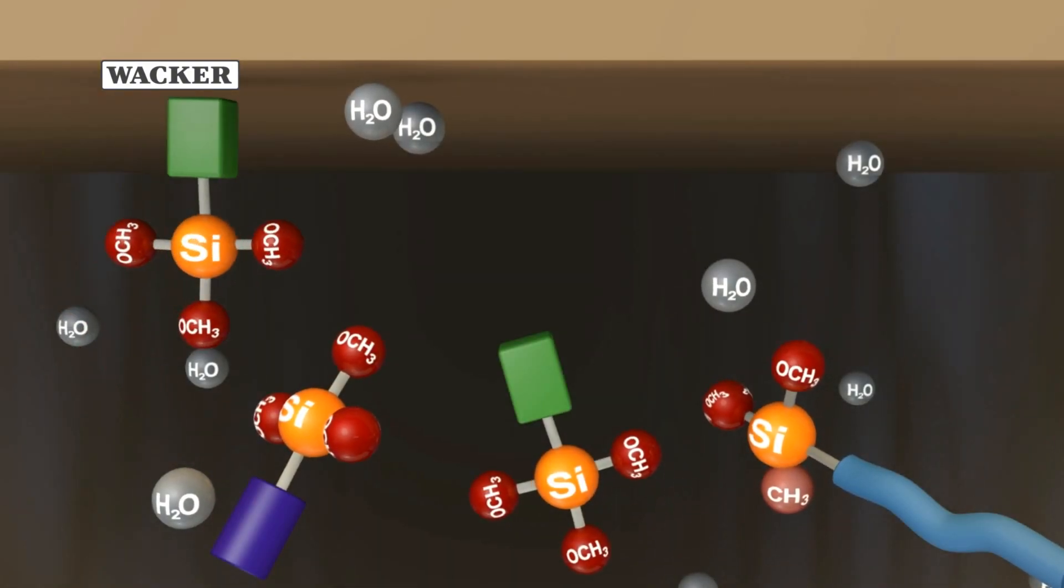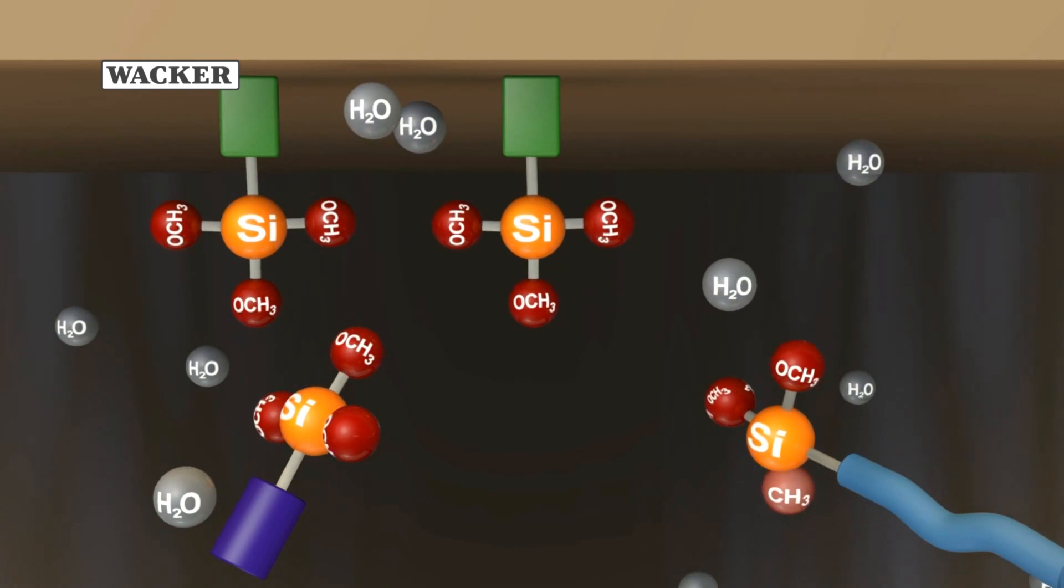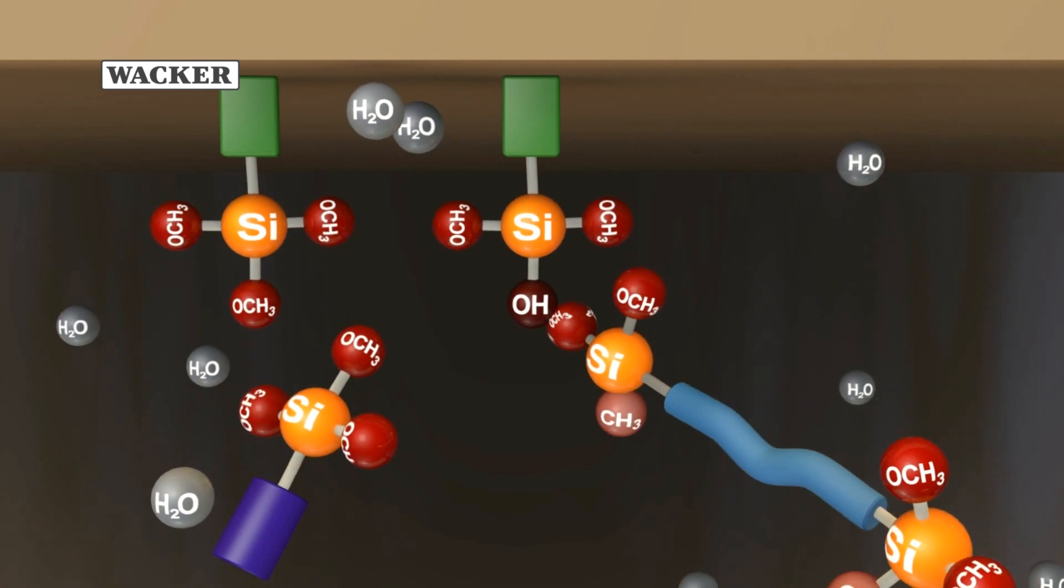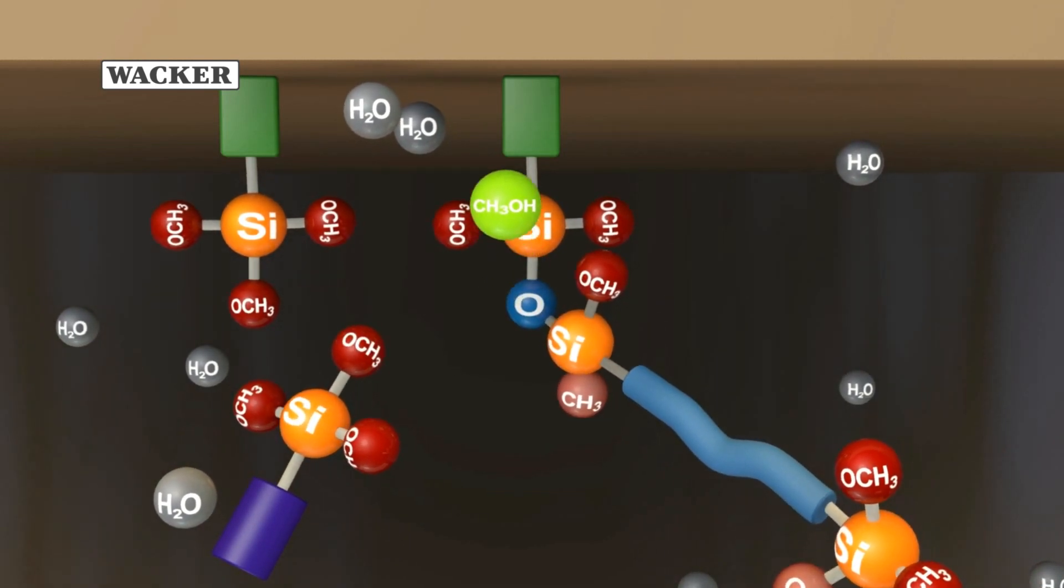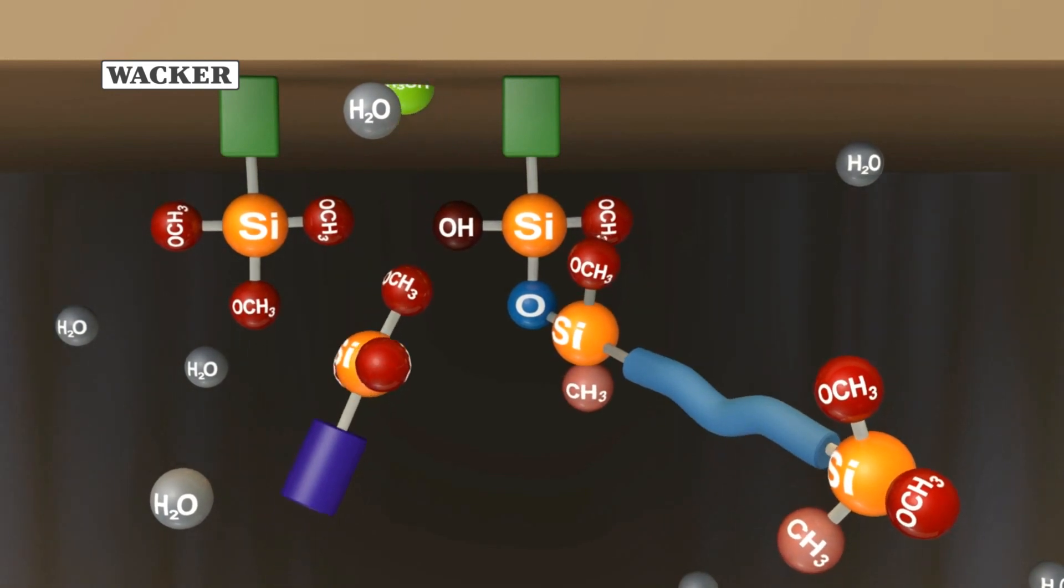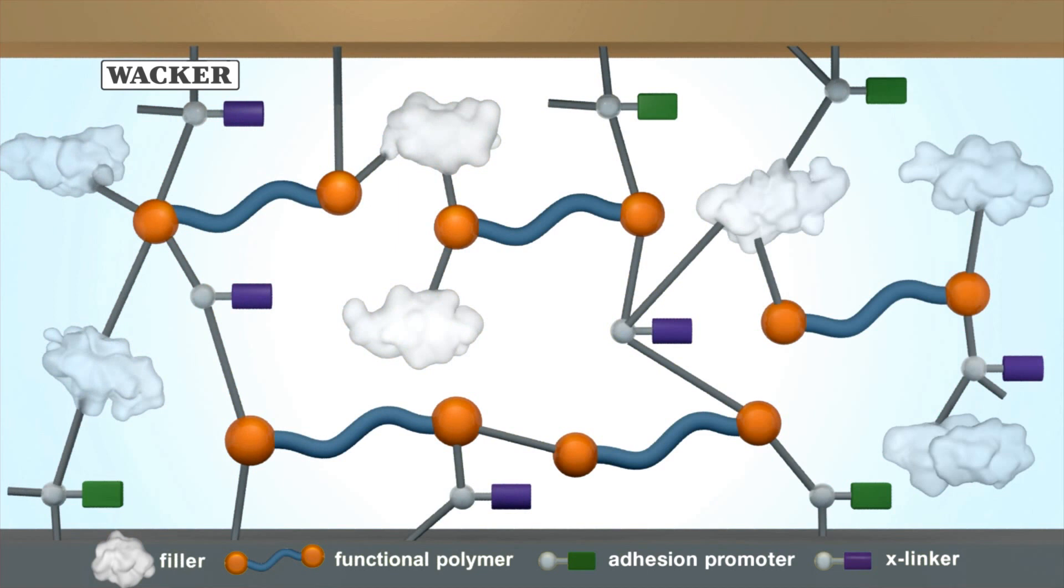The microscopic view illustrates structure and mode of operation. The ambient moisture starts the curing process. Methanol is released. The alpha effect leads to ultimate fast curing from the edge to the middle of the adhesive. A stable and reliable network has been formed.